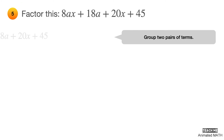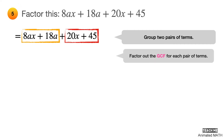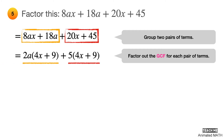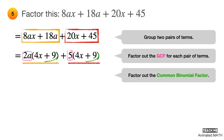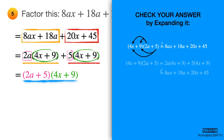Group two pairs of terms and work on them separately. The pairs of terms are shown using the orange and red boxes. Factor out the greatest common factor from each pair of terms. These GCFs are 2a and 5. Factor out the common binomial factor, which is 4x plus 9. You can then combine the GCFs from each pair of terms so that they form another binomial factor, which is 2a plus 5. And the final answer is (2a + 5)(4x + 9). Don't forget to check your answer by expanding it using polynomial multiplication, as shown in this video.